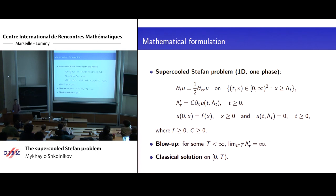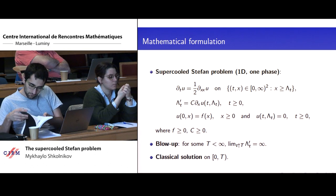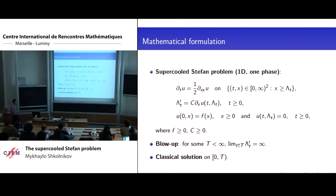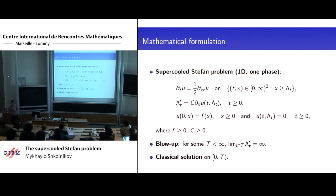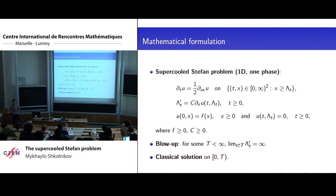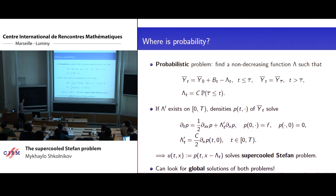The natural thing to do, as was done extensively in the PDE literature, is to say: we have this blow-up time, so let's look at the solution up to that time — on the interval from zero to capital T — and construct a solution at least until the time of blow-up. In one dimension, you can even construct a classical solution of this problem. In higher dimensions, you have to look for generalized notions of solutions. The main message today will be that you can go beyond this time capital T by looking at the probabilistic version of the problem.